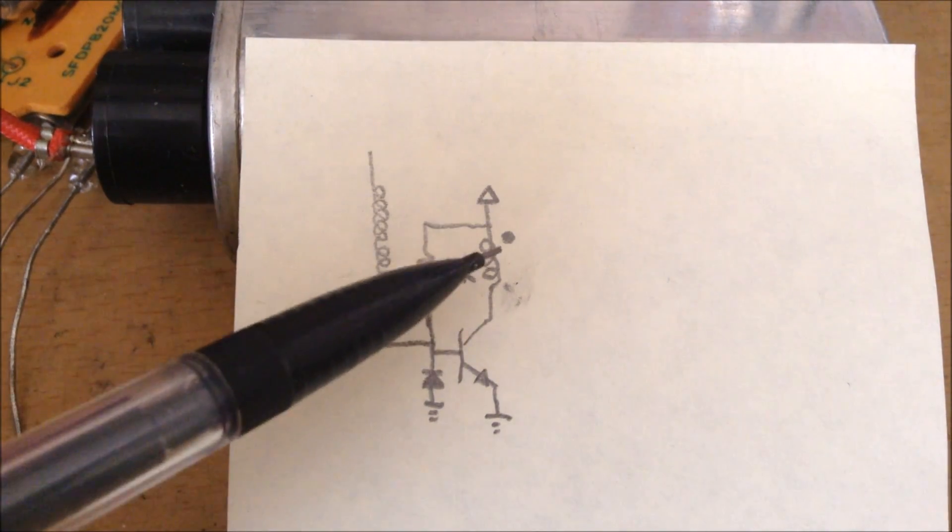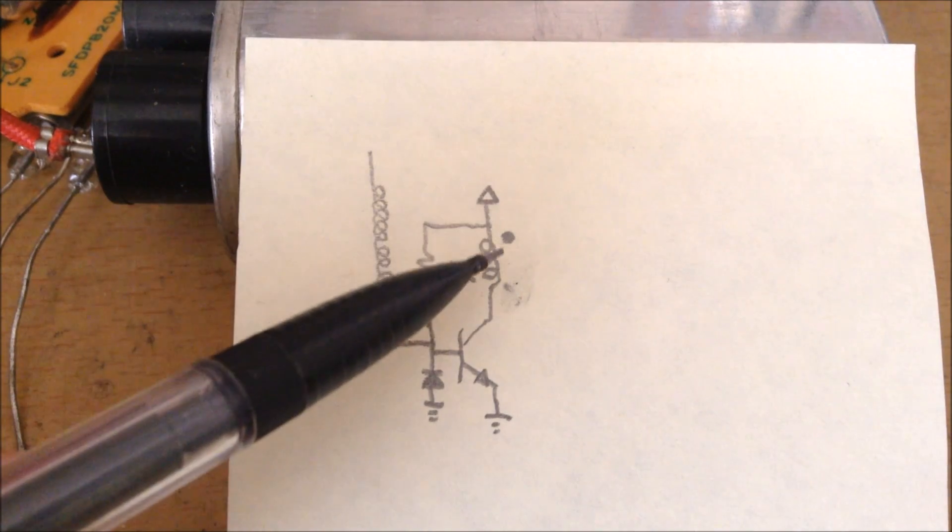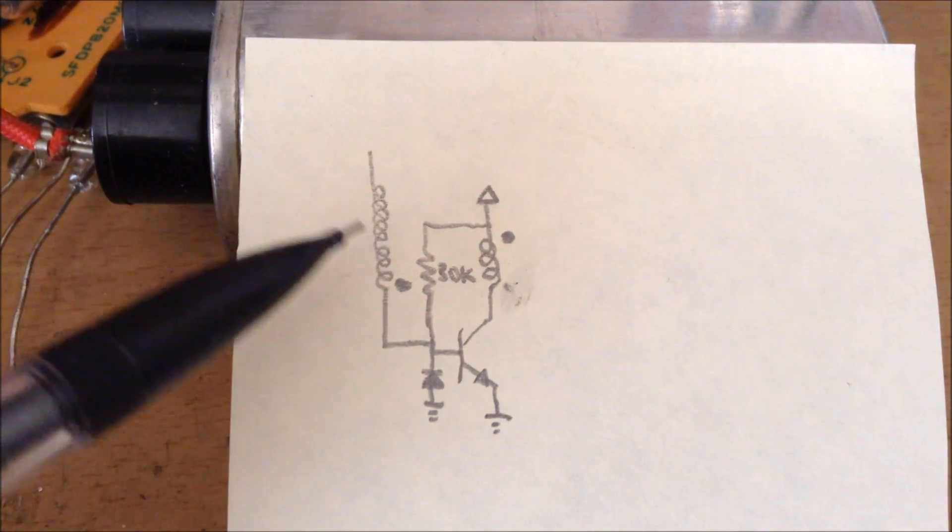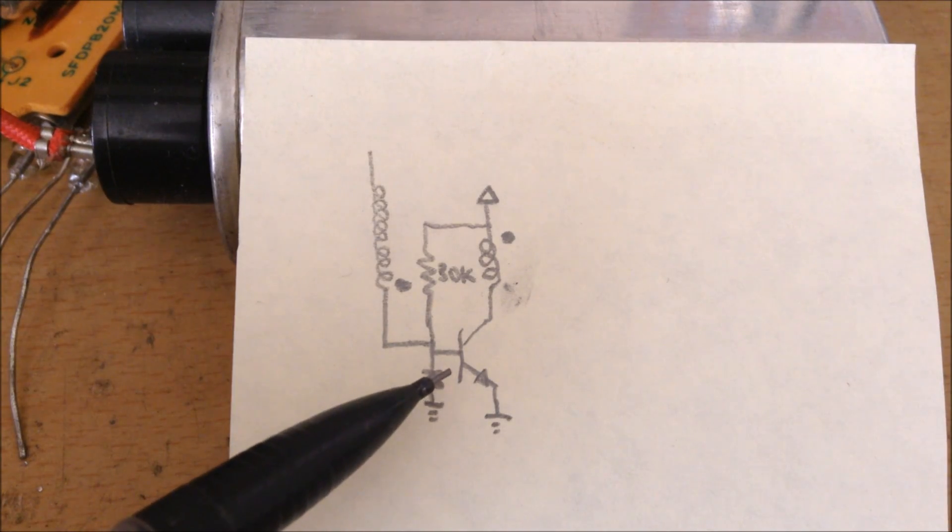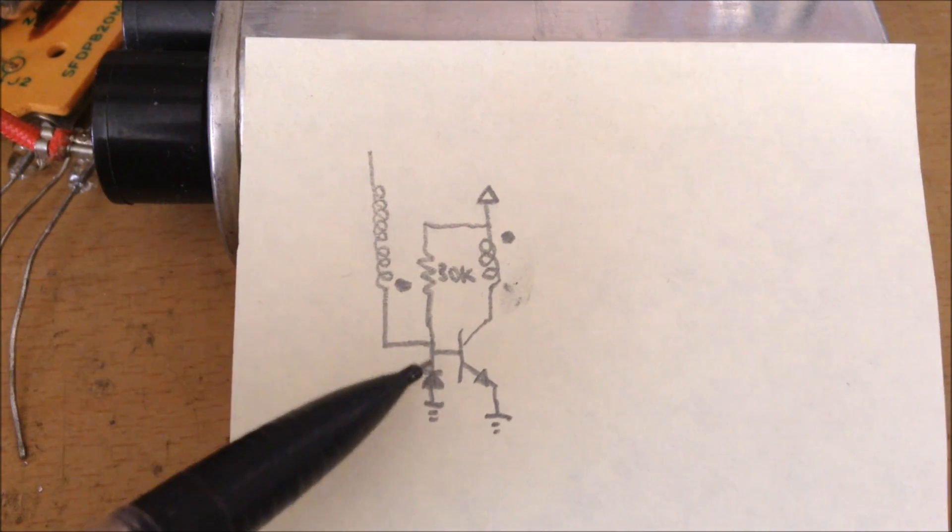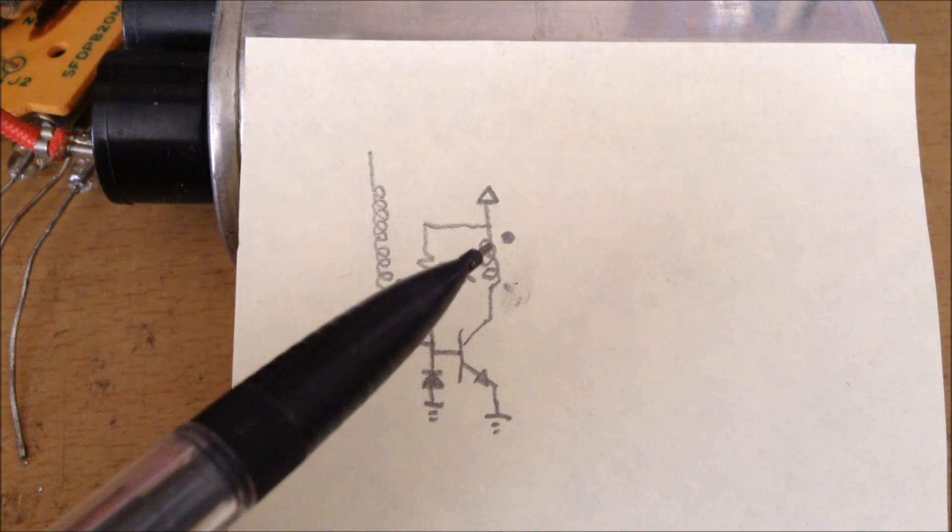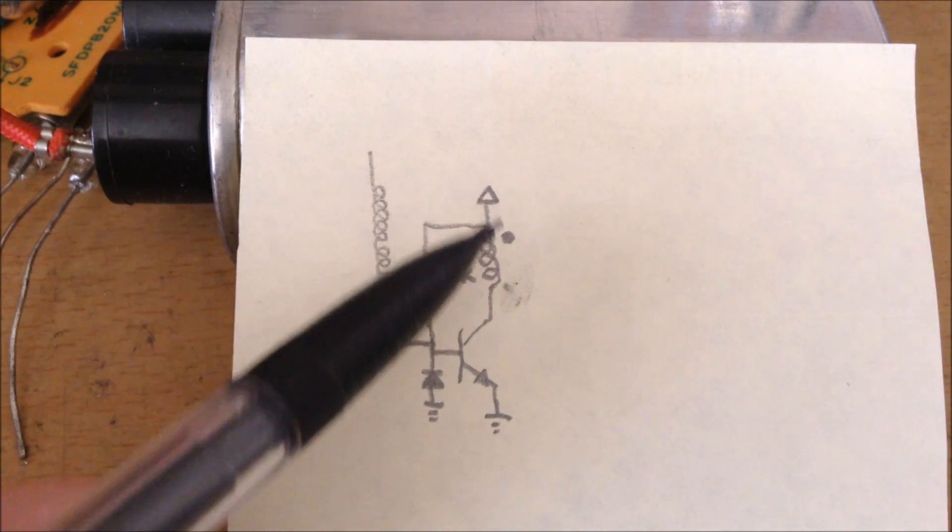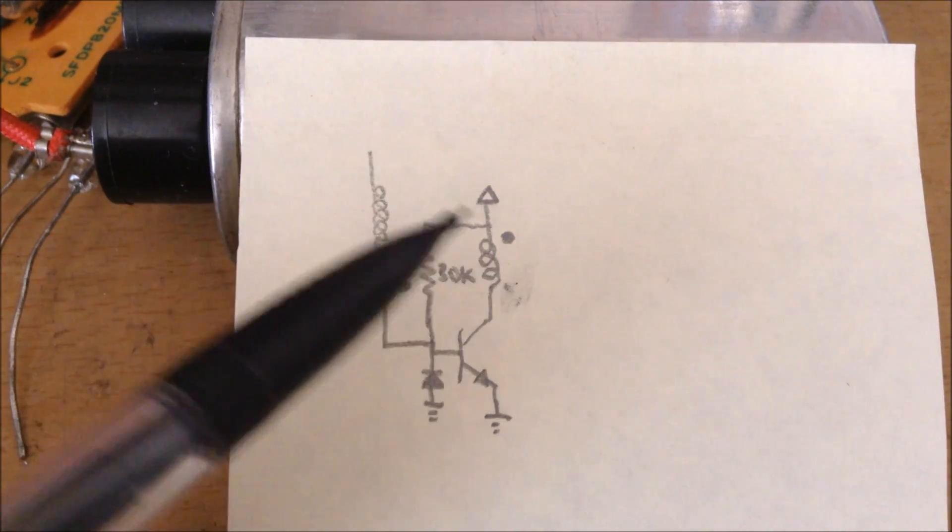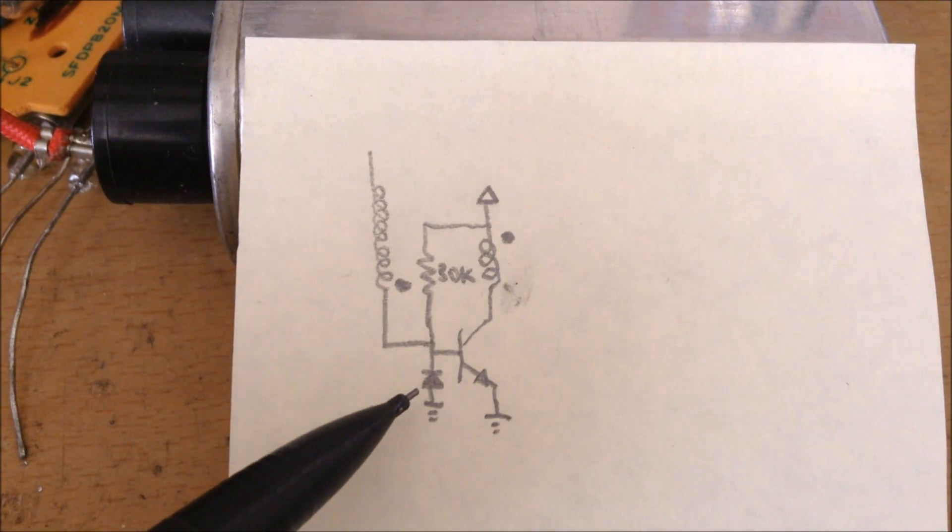When this turns on, it makes a current flow through this first primary coil, which induces a current in the secondary coil, turning off the transistor because it's a negative voltage. Then what will happen is the transistor will turn off, the current will flow again from the positive into the base, and it will turn on again in a repeating cycle. This diode is here just to protect the base of the transistor from overvoltage.